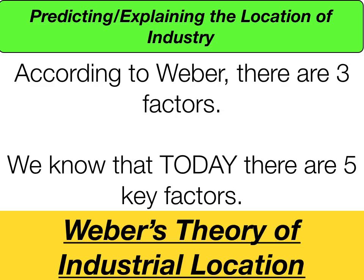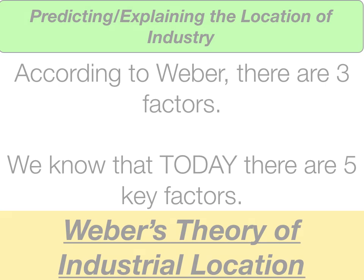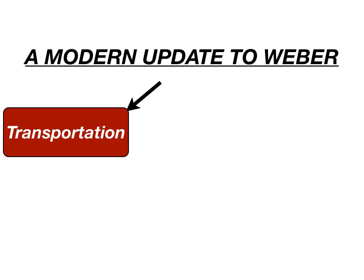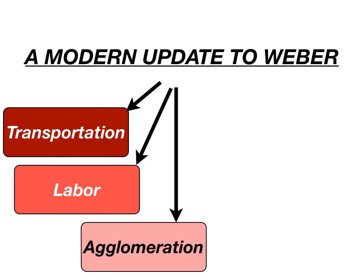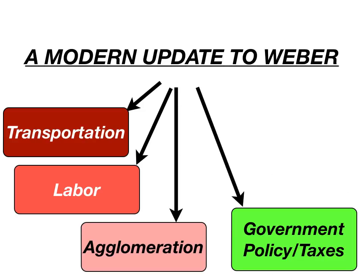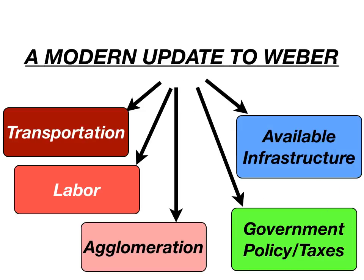According to Weber, there are three factors to predict where industries are located. However, today we know there are actually two more factors. So we're going to talk about five key factors — not discarding Weber, but updating him. Transportation, labor, and agglomeration are still factors, but we're adding government policy and taxes, and available infrastructure. These two are major in predicting the location of industry today.